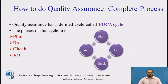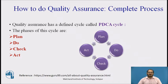How to do quality assurance? The complete process. Quality assurance has defined a cycle called the PDCA cycle. The phases of the cycle are Plan, Do, Check, and Act. These steps are repeated to ensure that the processes followed in the organization are evaluated and improved on a periodic basis.